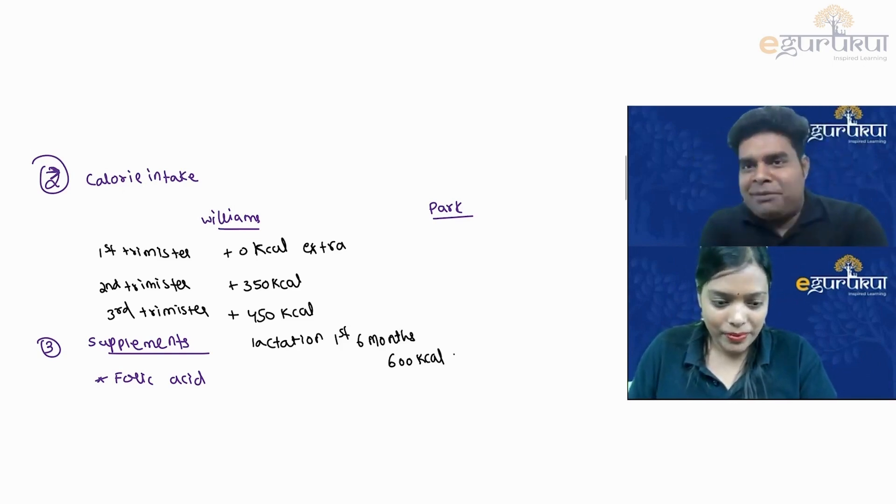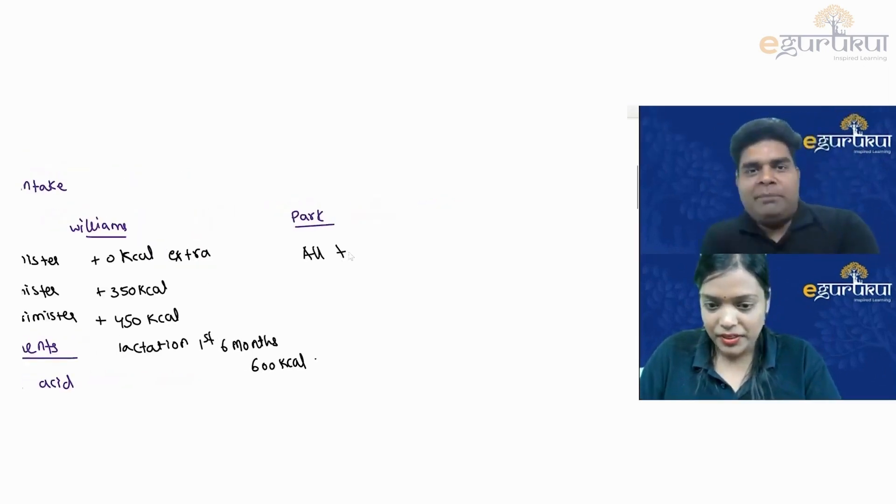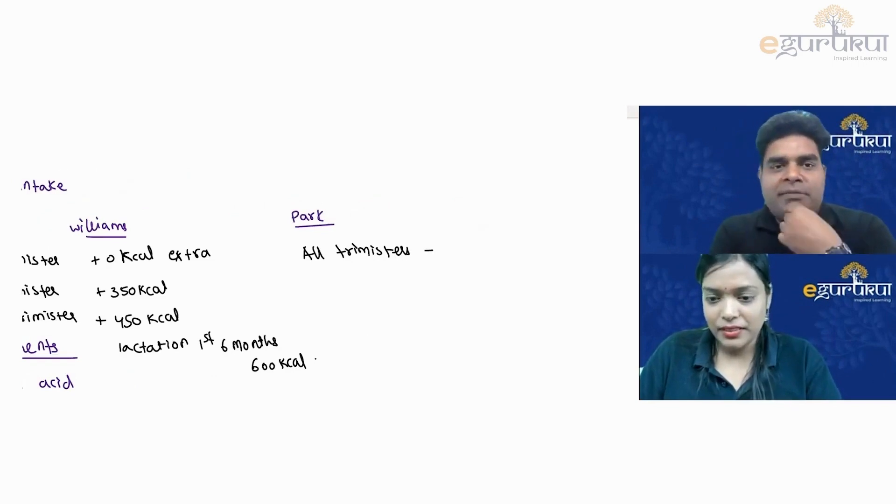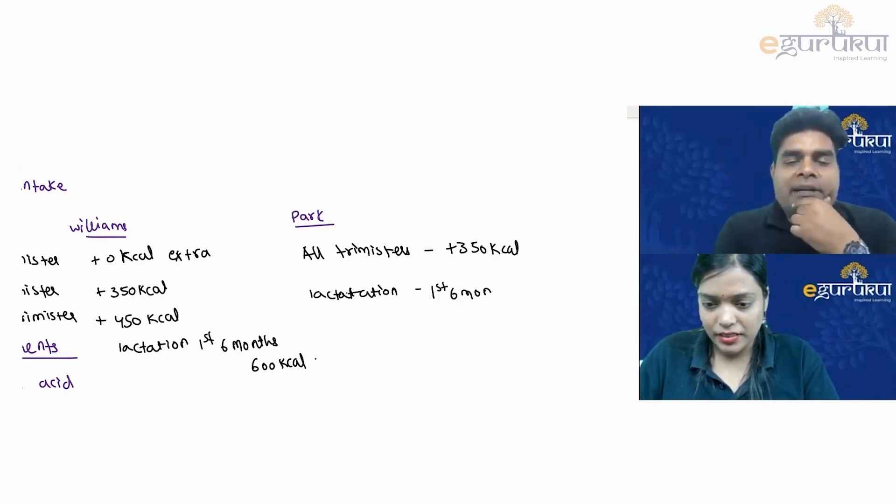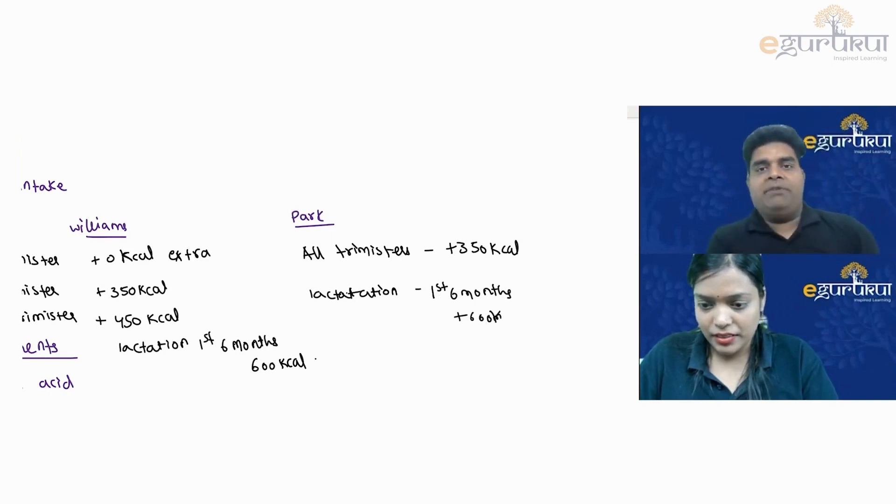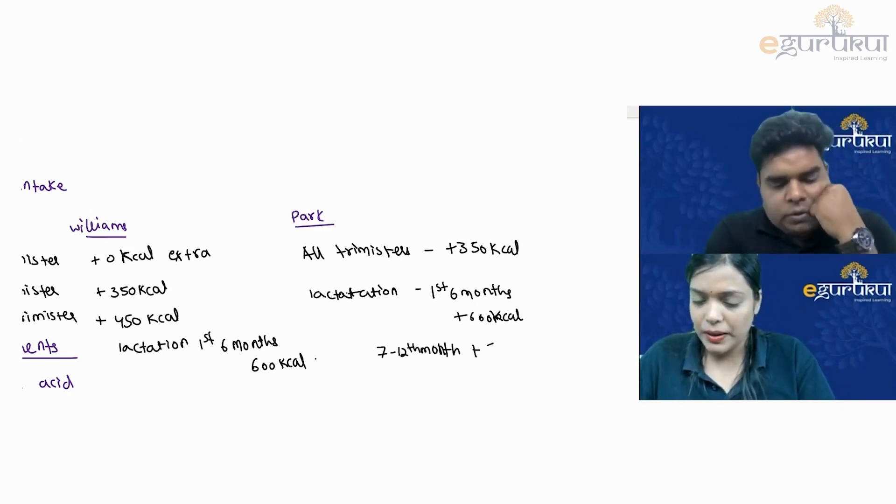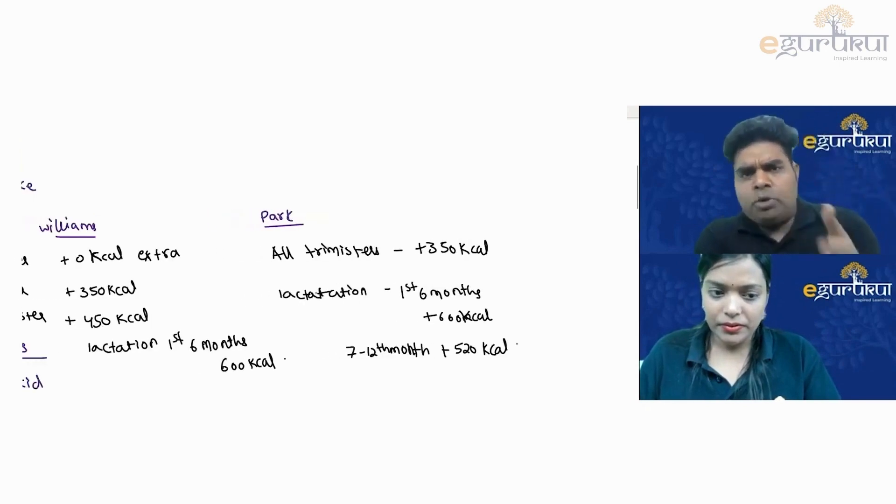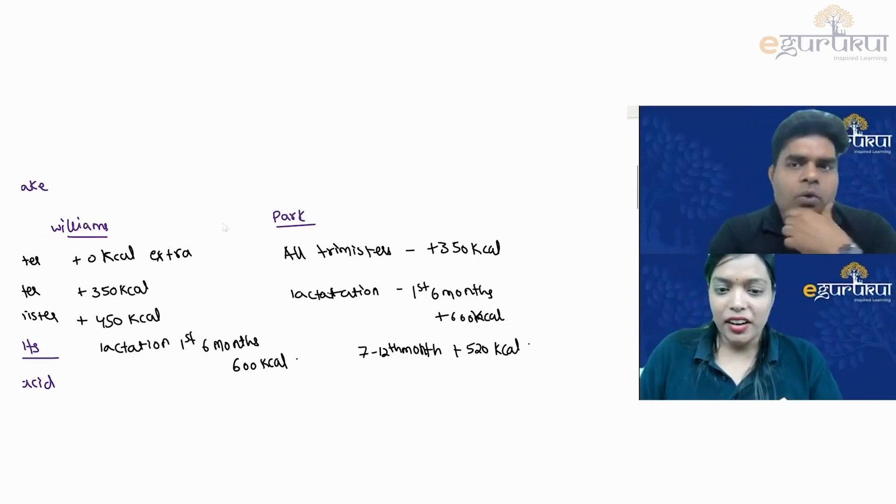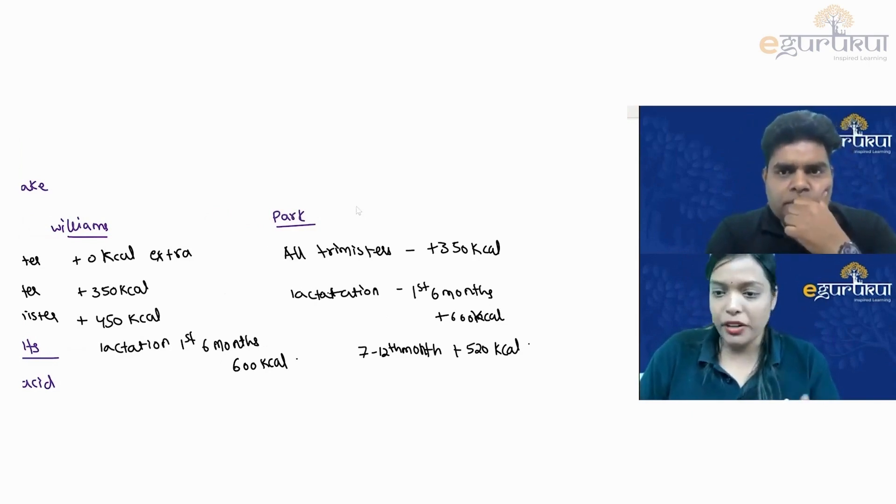PARC just directly says plus 350 kilocalories for all the trimesters. It doesn't differentiate between first, second, and third. Lactation for six months is exactly the same 600, which Ramasri ma'am is telling. In addition, PARC has also written that after six months, 7 to 12 months, it's 520 kilocalories. This is according to the ICMR 2020 guideline and it is published in PARC textbook. As PARC is more relatable to India compared to Williams, what is the best answer we can give for students?